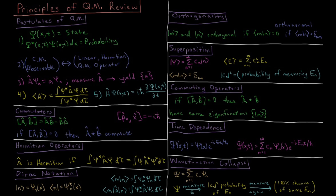The time dependence of the wave function — going from the time-independent psi of x to the time-dependent psi of x and t — is handled as follows. If you are in an eigenstate of the Hamiltonian, the time dependence is accounted for by appending a complex exponential: e to the minus i times energy times time divided by h-bar. More generally, if you are in a superposition of states, each individual state has its own time dependence appended, so you sum the coefficient times the spatial part times the time part for each state from 1 to infinity.